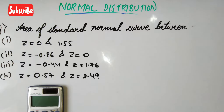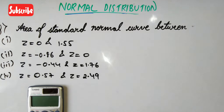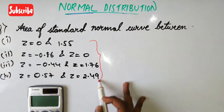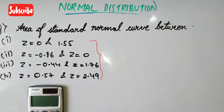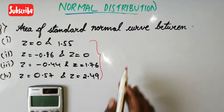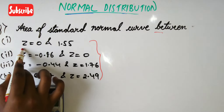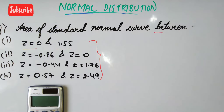Hello guys, welcome back. In this video we will try to analyze the normal distribution curve to find out the area of the standard normal curve between certain values. We will start with the first one: we need to find the area of the standard normal curve from z equals zero to z equals 1.55.